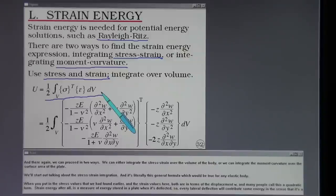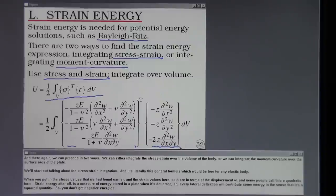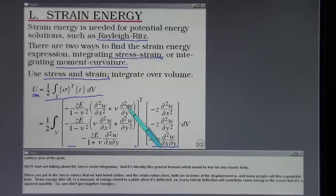We'll start out talking about the stress-strain integration and it's literally this general formula which would be true for any elastic body. When you put in the stress-strain values that we had found earlier and the strain values here both are in terms of the displacement W and many people call this a quadratic form. Strain energy after all is a measure of energy stored in a plate when it's deflected so every lateral deflection will contribute some energy in the sense that it's a squared quantity. So you don't get negative energies.